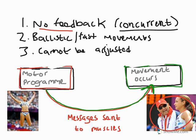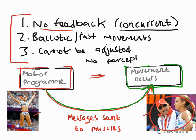So, a real simple session today. Make sure you can describe these three points, make sure you can draw this illustration, and make sure you can give the example we provided today — or you can use an alternative one such as a golf swing or a javelin throw. Two additional points: there's no perception during the performance, and of course that leads to what is essentially a closed or simple skill. You might want to reflect on that classification of skill we've looked at in a previous session.